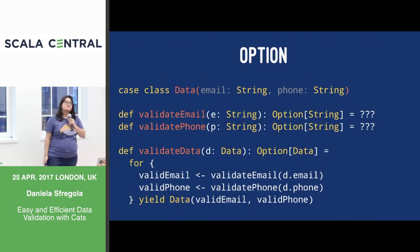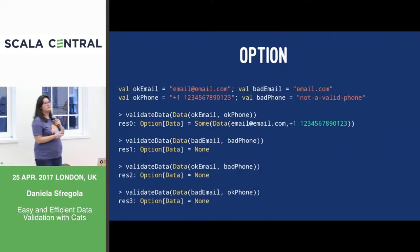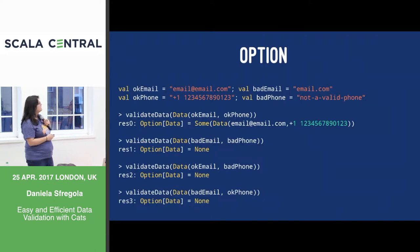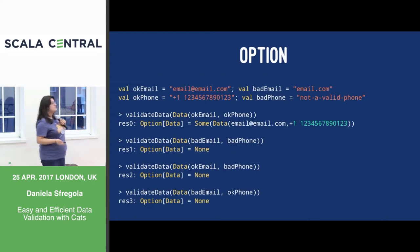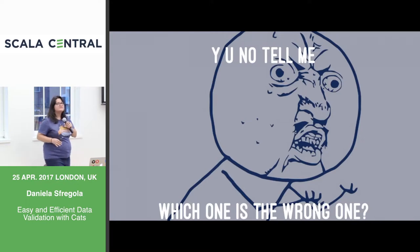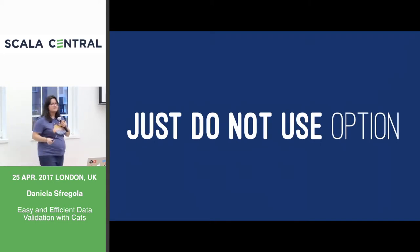By just looking at the return type of the function, what's wrong? What was the problem that made the whole thing fail? If we pass an okay email and okay phone, fine, I get the data back. But if I pass both fields wrong or one of the two wrong, by just looking at the output of the function, I don't know what was wrong. Was it the email? Was it the phone? Was it both? I have no clue. This is basically the same as using isValid true or isValid false. We haven't done anything more than that. Don't use Options for validation — Option is great, just not for validation.